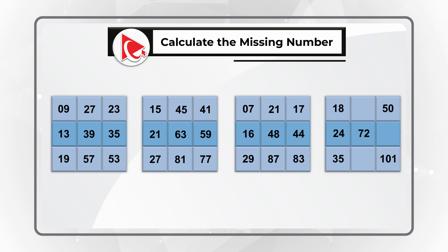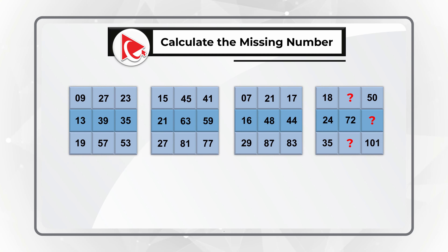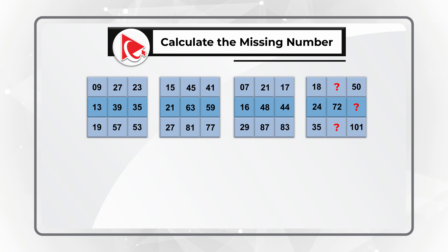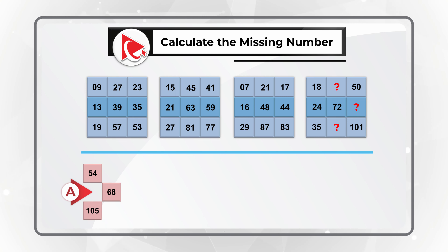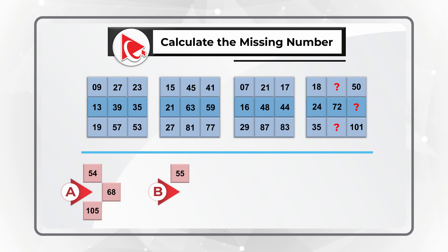Choice B: they are sisters. Choice C: they are cousins. Choice D: they are just friends. Take a close look, maybe pause the video, and once you've solved it please post your answer in comments — this allows me to give you feedback. Good luck!